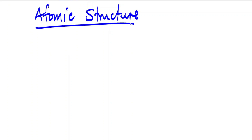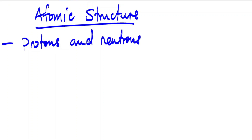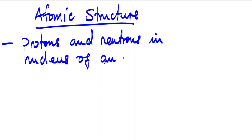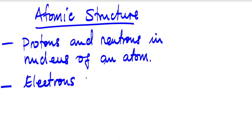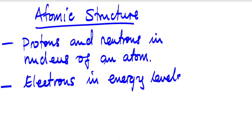We'll talk about the composition of an atom. You should know that an atom consists of protons and neutrons in the nucleus of an atom. The second thing you should know is that it also consists of electrons in what is known as energy levels, commonly known as shells or orbits.